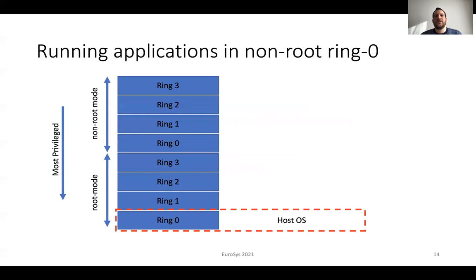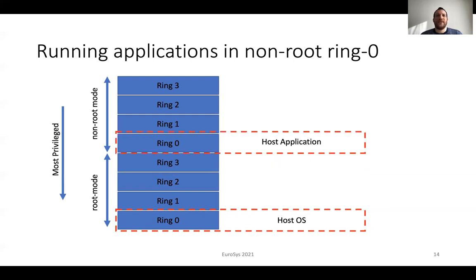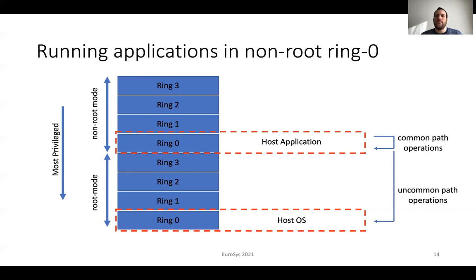Today, the operating system runs in root ring 0 and user applications run in root ring 3. The main idea is that Akila runs applications in non-root ring 0. This enables handling all common path operations without the need for a protection domain switch and serves page faults in a trapless manner. Akila also requires the host operating system to serve uncommon path operations. In this case, it requires a VM exit and uncommon path operations are heavier than before, but this is not an issue as they happen less frequently.